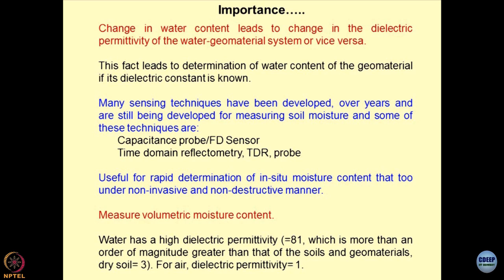There is another set of sensors known as TDR probes — time domain reflectometry probes. Both these probes are being utilized in the laboratory and in the field to measure electrical properties like dielectric permittivity of the material, which is linked with the volumetric moisture content. Volumetric moisture content is linked with saturation and density of the material. These are non-invasive and non-destructive techniques — that is the most important advantage of resorting to electrical measurements. You are not changing the structure of the soil, not destroying the sample, and not invading it. That is the biggest advantage of resorting to electrical properties of geomaterials for characterization.